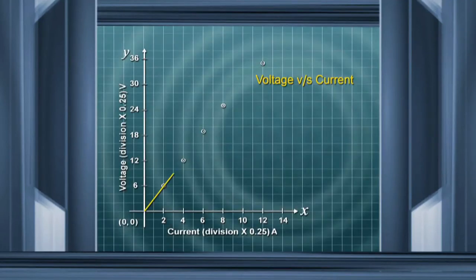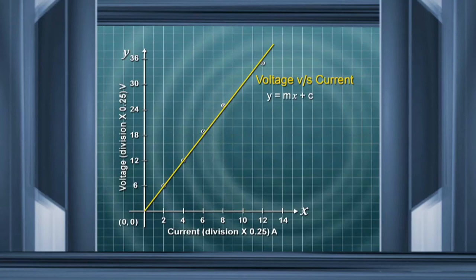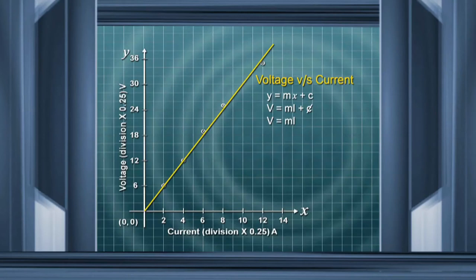If we draw this, it is a straight line. For y and x, the relationship is y = mx + c. In our case, the y axis is voltage and the x axis is current. The value of c is not present — there is no intercept — so the equation of this line is V = mI. The slope of the line has physical significance: m equals V over I, which is resistance. So the resistance of the wire comes out to be the slope of this line.